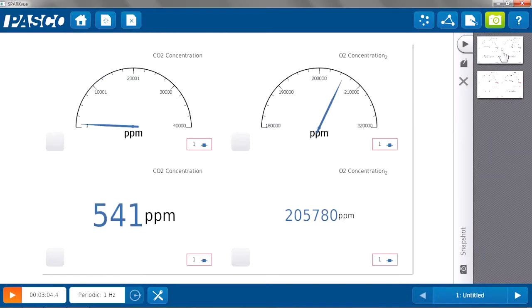They can also do a similar comparison for oxygen. Initially starting out at 205,780 parts per million, you can see the needle go down, and that concentration of oxygen was less in their exhaled air, only 181,192 parts per million.